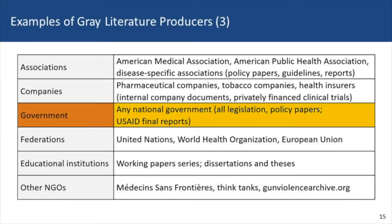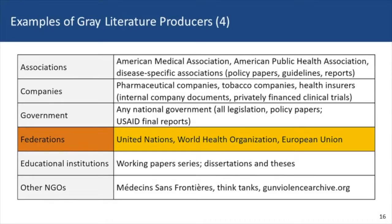All government documents — if you're looking at a policy or legal question, all the legislation and policy papers from the various branches of any government in the world. If you're interested in a different kind of government-produced document, governments provide funding for international aid, and there's documentation of all those final reports. If you want to know what works and what doesn't, you can find that through USAID's website, for example. At a super-government level, there are federations that produce similar material: the United Nations, World Health Organization, and the EU.